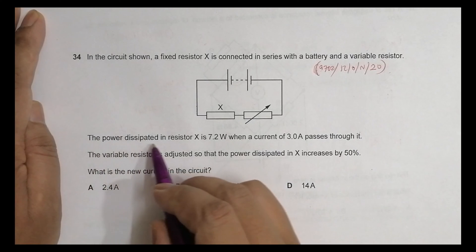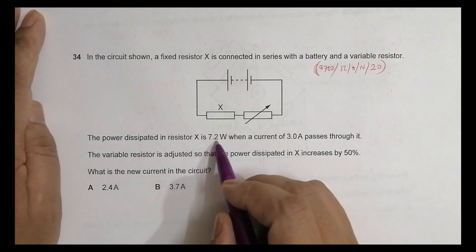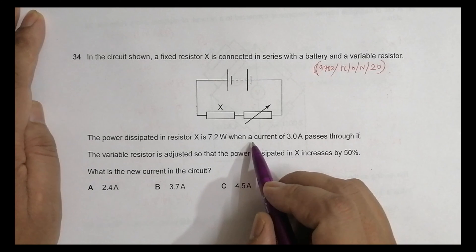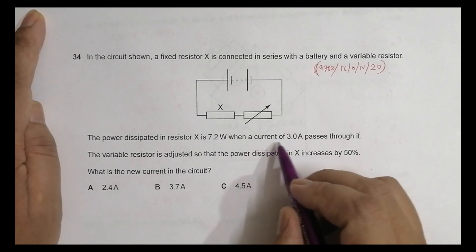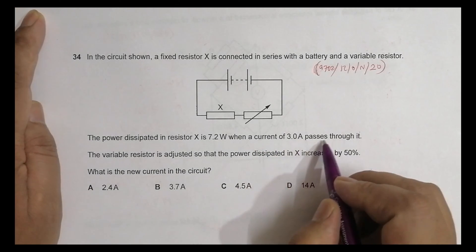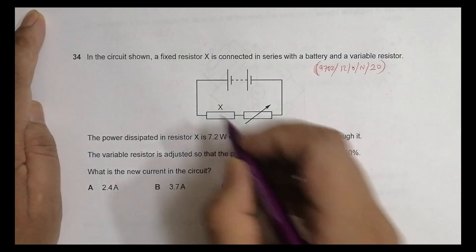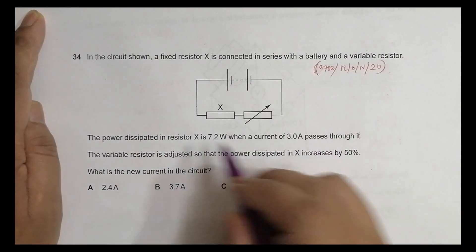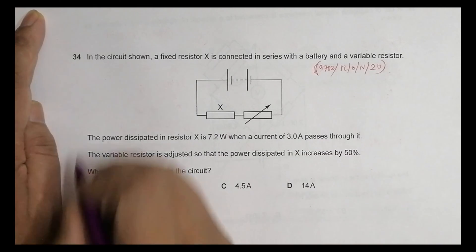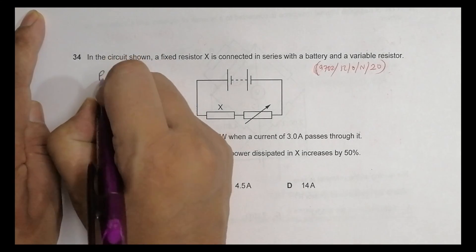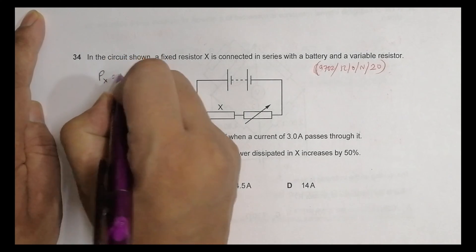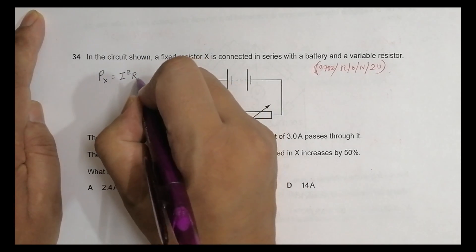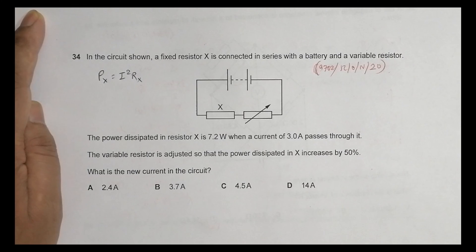The power dissipated in resistor X is 7.2 watts when a current of 3.0 amperes passes through it. So the initial current is 3.0 amperes and the power is 7.2 watts. I can write: power in X equals I squared times its resistance R_X.